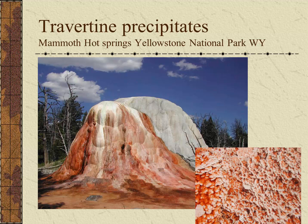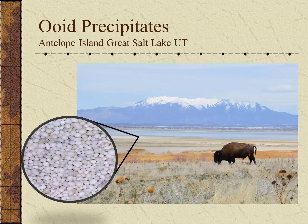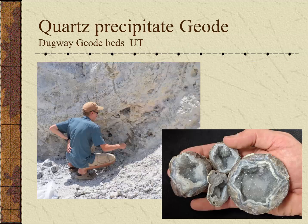Another common precipitate in geothermal areas is travertine. Near Mammoth Hot Springs in Yellowstone National Park, we can see large buildups of travertine as mineral-rich water springs to the surface from this volcanic region. A unique type of precipitate can also be found in the sands around Antelope Island on Great Salt Lake in Utah. Under a microscope, the sand grains appear not as rock fragments but as round egg-like structures called ooids, formed by chemical precipitation of limestone from mineral-rich water. Finally, with silica-rich water, quartz may precipitate into cavities in rocks, forming geodes — often in limestone or volcanic regions — where quartz and other mineral crystals line the inside of a cavity.